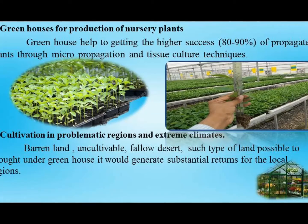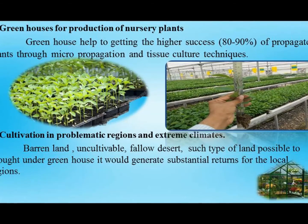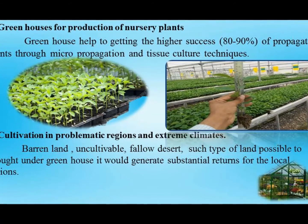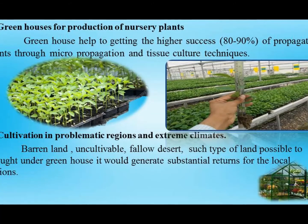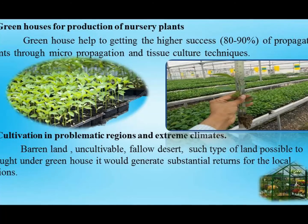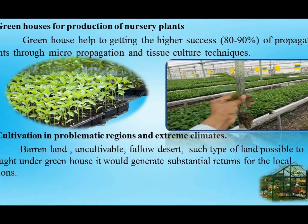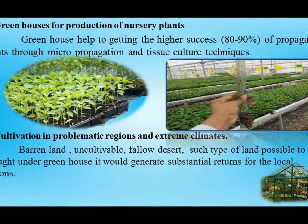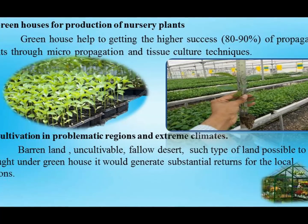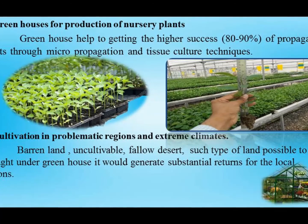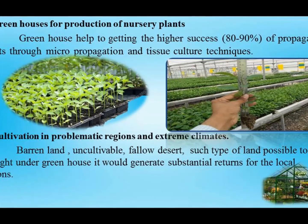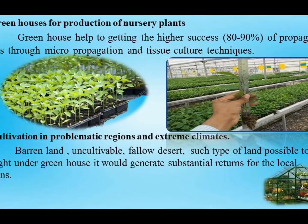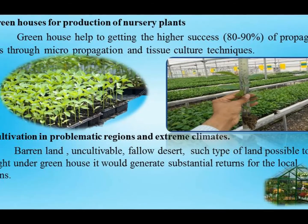The next importance of greenhouse is cultivation in problematic regions and extreme climatic conditions. In India, nearly about 75 million hectares is reported to be either barren, uncultivable, or fallow land. This land can be brought under erection of polyhouses, which helps to increase area under polyhouse growing and helps to sustain economic production, getting higher returns to the farmer in uncultivable and barren land.